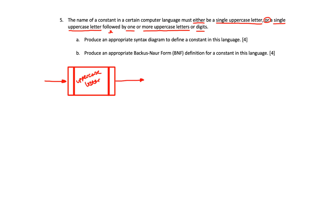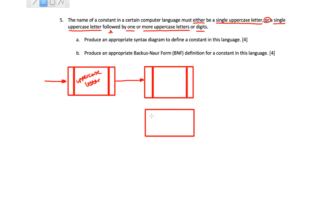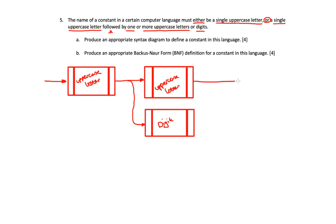Reading on, now that I've sorted the uppercase letter, I need to follow it by one or more uppercase letters or digits. So I'll put in two terminals here — one for my uppercase letter and one for my digit. If I put them on the same line like this, it shows that I can have one or the other, and I draw my arrows down into the digit and then from the digit and the uppercase letter to continue on.